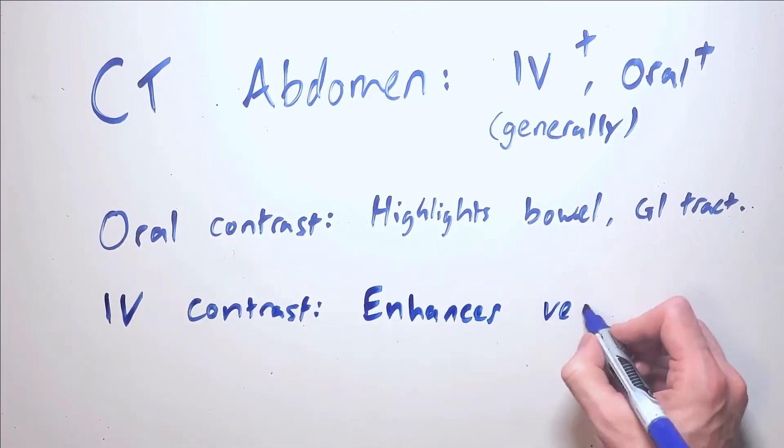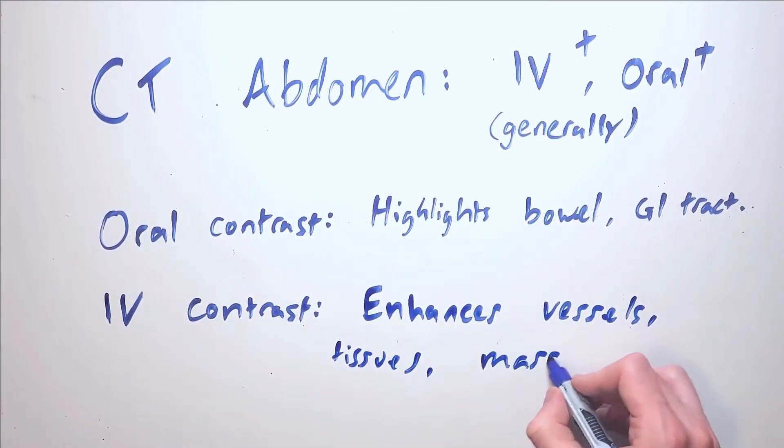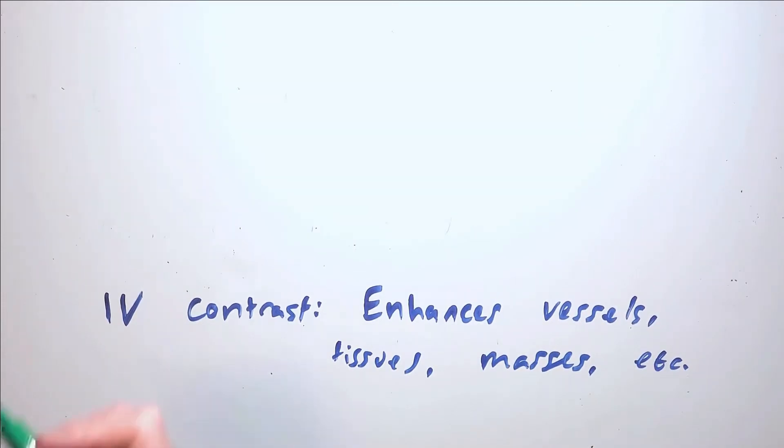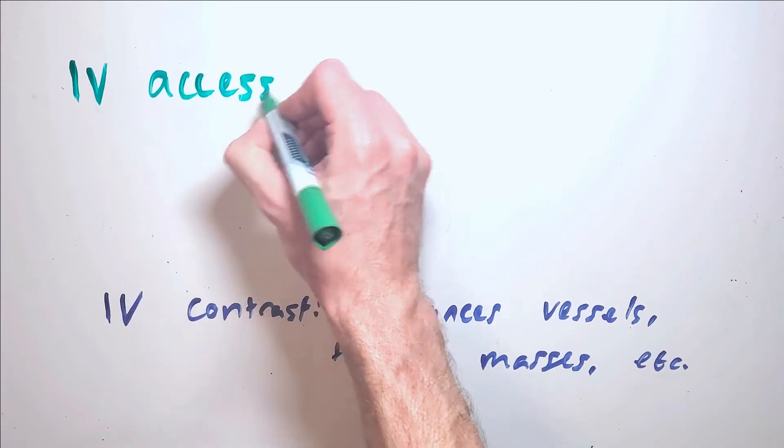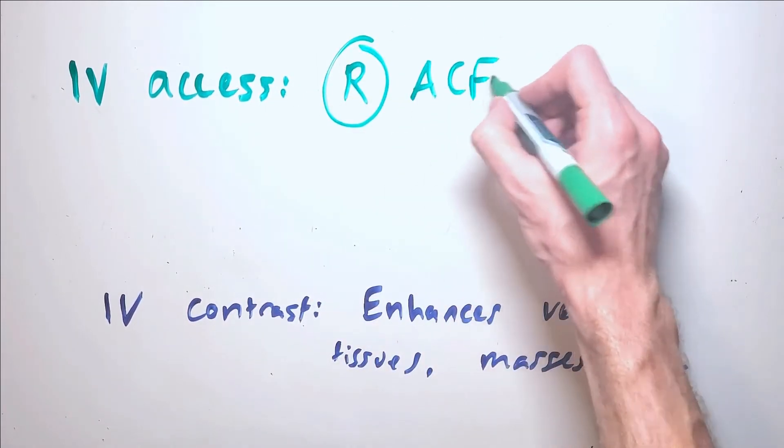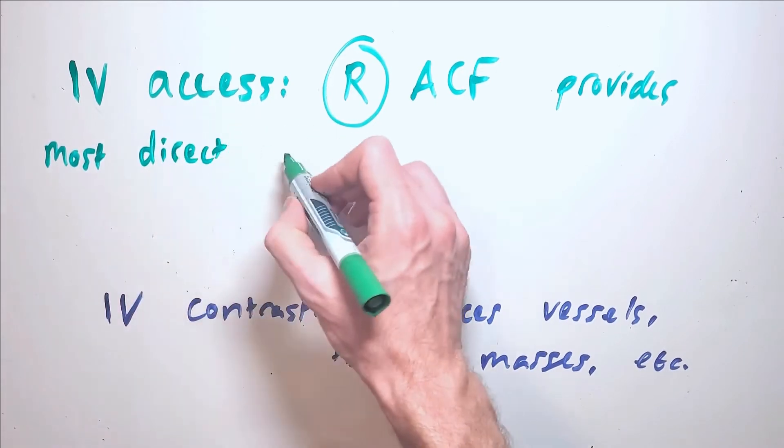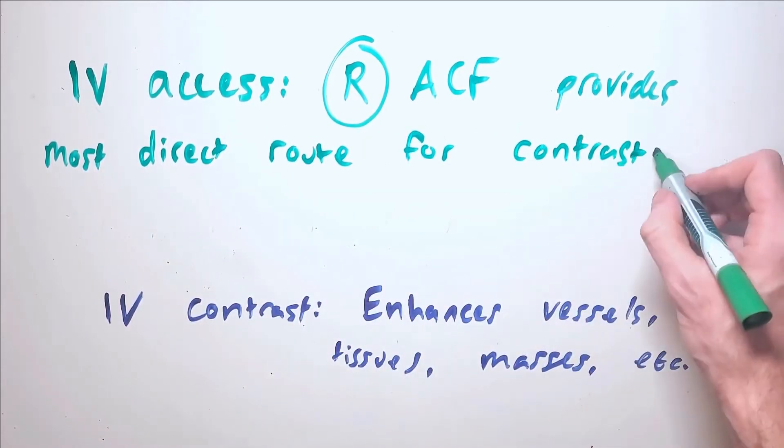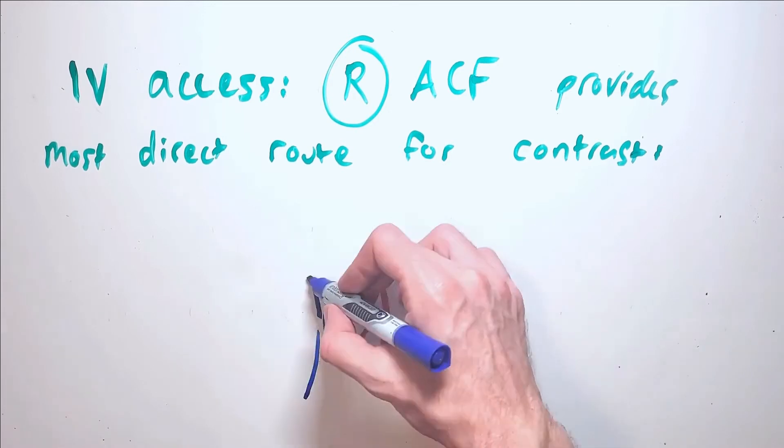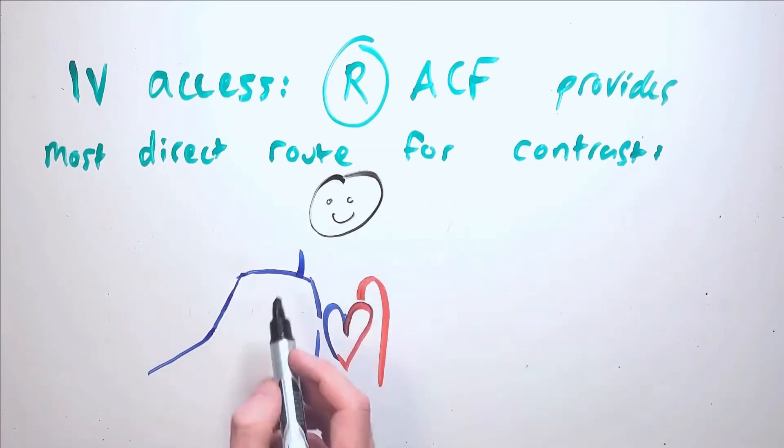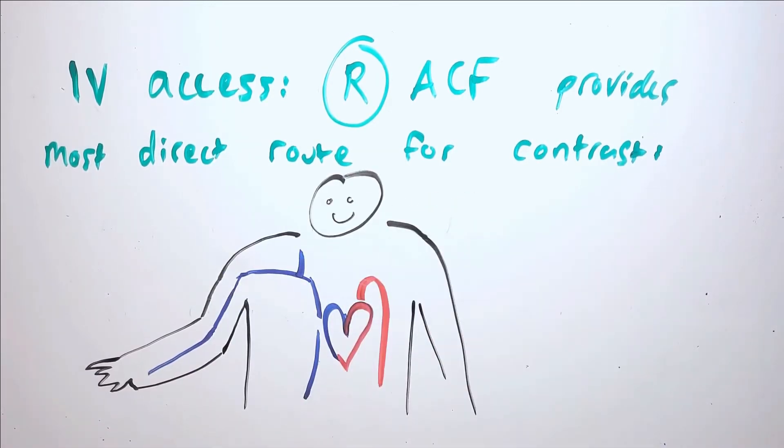Intravenous contrast is the most common route of administration and often the CT technologist will be the one preparing the patient for the contrast by obtaining IV access, typically in the hand or the antecubital fossa. Often the antecubital fossa is the easiest site to access and it has relatively large veins which can accommodate a high flow rate for contrast injection. The right antecubital fossa provides the most direct route into the heart for a peripheral IV.